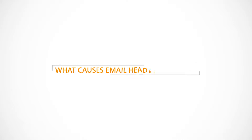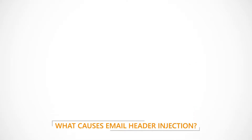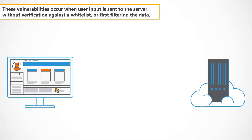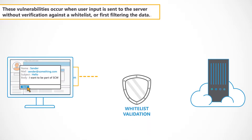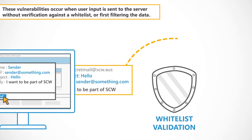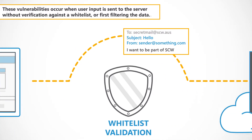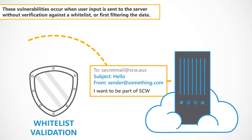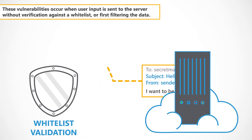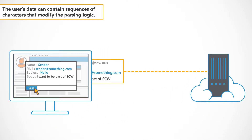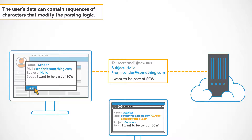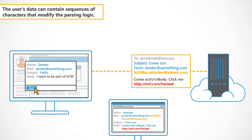What causes email header injection? These vulnerabilities occur when user input is sent to the server without verification against a whitelist or first filtering the data. The user's data can contain sequences of characters that modify the parsing logic.